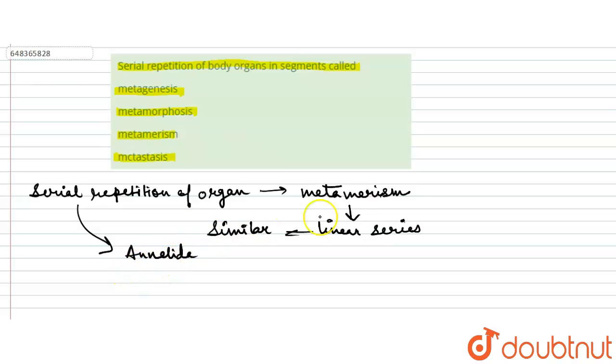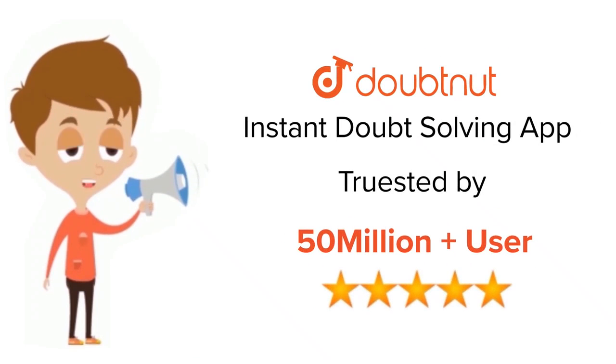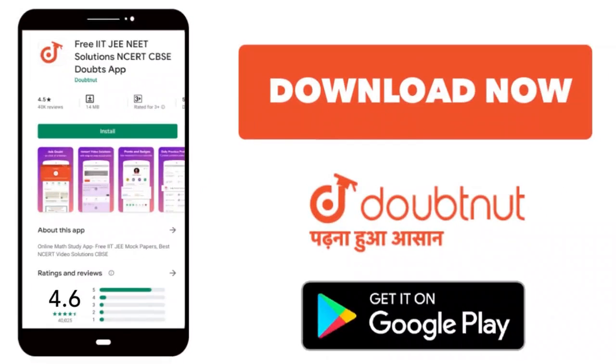So the correct answer is metamerism. Option C is the correct answer. Thank you. For class 6-12, IITJEE and NEET level, trusted by more than 5 crore students. Download Doubtnet today.